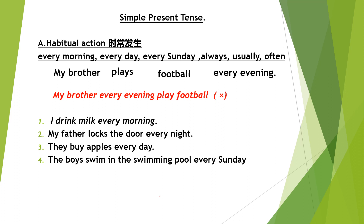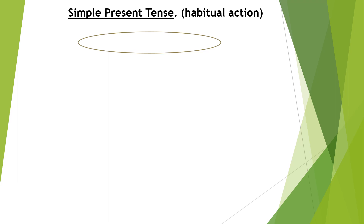After you have finished, check the answers with your mummy. We are still talking about simple present tense showing habitual action. Besides words like every morning, every day, every afternoon, every Sunday, there are other words that also mean habitual: always, usually, often. These three words also mean 'frequently'.